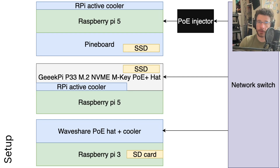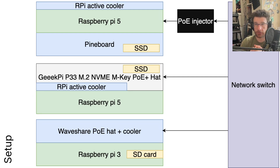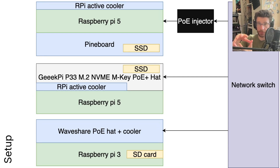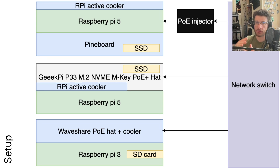For the second Pi, I got a Geekworm Pi P33 NVMe PoE hat, which came with a cooler as well. That goes on top and I don't need the Pine board underneath — it does PoE and it just does it all in one. It's quite a good price as well — a much neater solution.